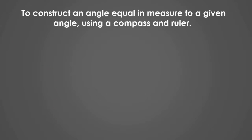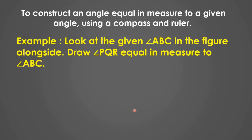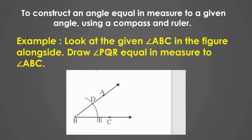Now we will see how to construct an angle equal in measure to a given angle using a compass and ruler. Example: look at the given angle ABC in the figure. Draw angle PQR equal in measure to ABC. Using compass and ruler we will draw angle PQR equal in measure to angle ABC, following some steps.